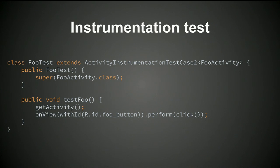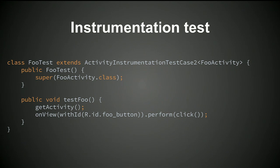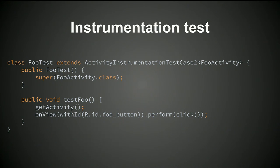The getActivity call will either launch the activity if it's not already launched, or launch it the first time it's called for that test case. The last line here is a bit of Espresso code — it's a fluent API that does exactly what it sounds like: on the view with ID foo_button, it performs a click. That's what an instrumentation test looks like. You put it in that folder, Gradle will do the right thing and deploy it.